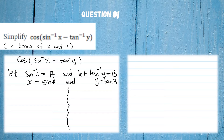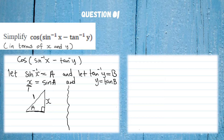From the expression sin A = x, we draw a right-angle triangle. Sine is opposite over hypotenuse, so opposite = x and hypotenuse = 1. We need to solve for the adjacent side using the Pythagorean theorem: 1² = x² + adjacent², so adjacent = √(1 − x²). That gives us all three sides of the triangle for angle A.